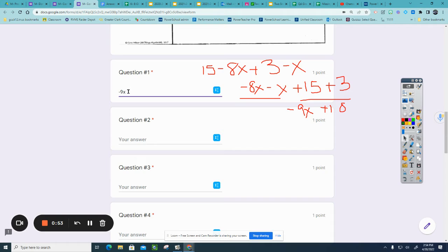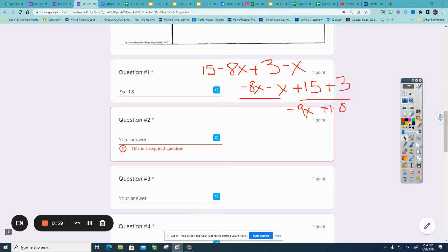Question number two is negative 12m plus 5 minus 10 plus 3m. I'm going to rearrange them into the order with the variables in the front. So negative 12m plus 3m plus 5 minus 10.